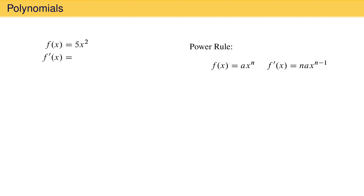This allows us to quickly evaluate the first derivative of 5x squared as 10x, which is obtained by multiplying the constant 5 by the original power 2 and then lowering the exponent from 2 to 1. We can take the first derivative of this result to obtain the second derivative of the original function, which is 10, using the power rule.